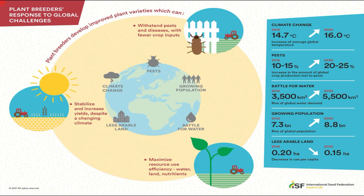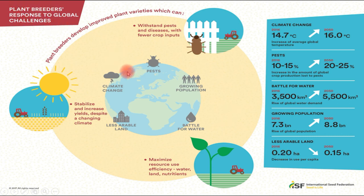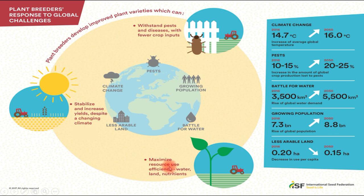By 2050, global crop production loss to pests is expected to increase from 10–15 percent to 20–25 percent. Available arable land per capita is projected to decrease from 0.20 hectares in 2016 to 0.15 hectares in 2050. Plant breeders respond by developing improved plant varieties that can withstand pests and diseases with fewer crop inputs, and varieties that can stabilize and increase yields despite a changing climate.